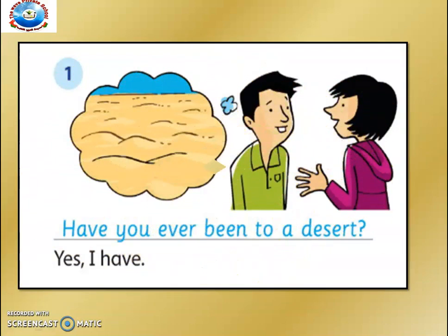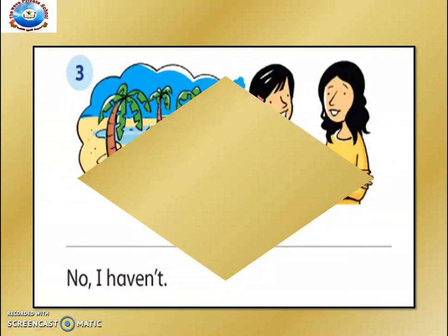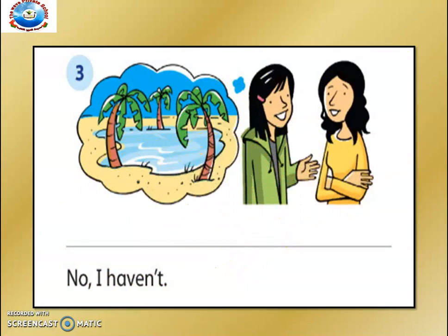Let's do the exercise on the same page. The first one is done for you: 'Have you ever been to a desert? Yes, I have.' Now let's see the next image — you can see an OSS and two girls. The question formed here is: 'Have you ever been to an OSS? No, I haven't.'